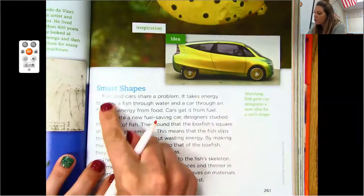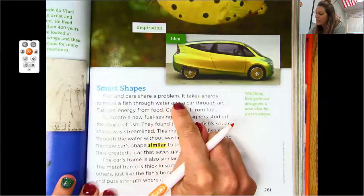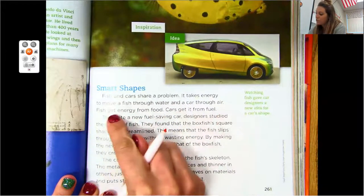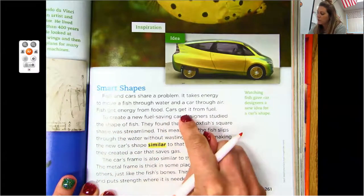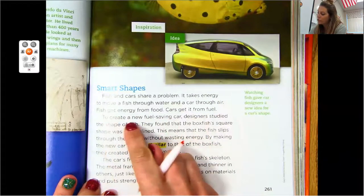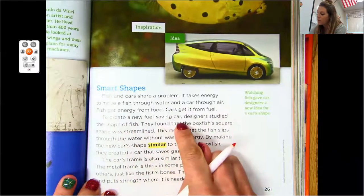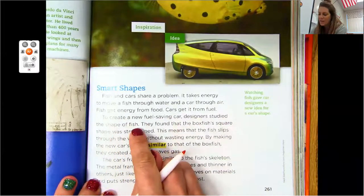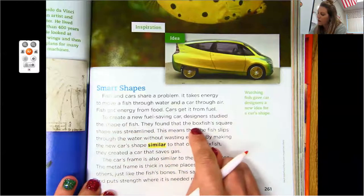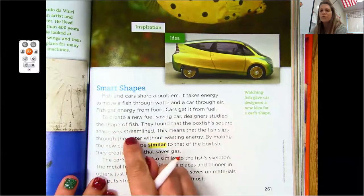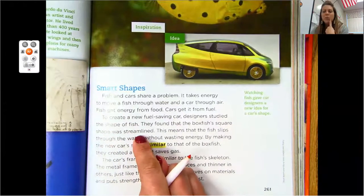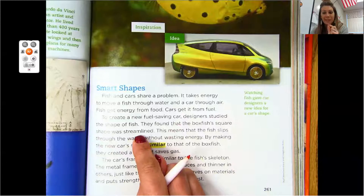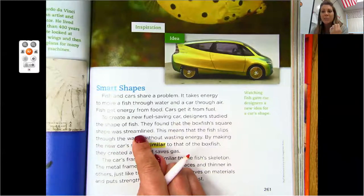Smart shapes. All right. Ready? Fish and cars share a problem. It takes energy to move a fish through water and a car through air. Fish get energy from food. Cars get it from fuel. To create a new fuel saving car, designers studied the shape of fish. They found that the box fish's square shape was streamlined. Okay. So sometimes we're going to come across words and we don't really know what they mean. So if you keep reading.